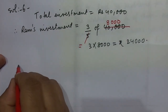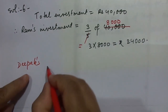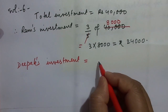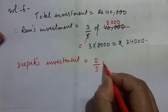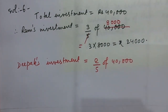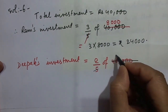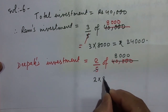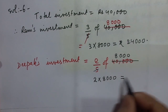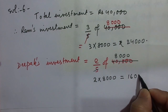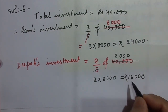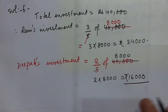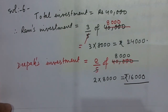Now, Deepak's investment will be equal to two by five of forty thousand. Two by five of forty thousand — we will cancel five, eight times forty, and then zero zero zero. So we get two multiplied by eight thousand, which is sixteen. We will put these three zeros, so we have rupees sixteen thousand as Deepak's investment. They are very easy; the only thing which matters is your presentation, nothing else.